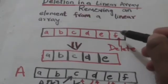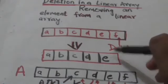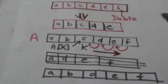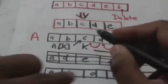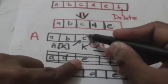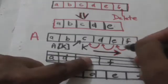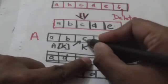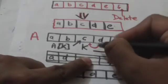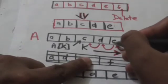If we have to delete the last element of the array then we can directly delete it. Now suppose this is the array A and we have to delete the element C from this array. Then element D will be shifted into the cell previously occupied by C, element E will be shifted into the next cell, and element F will be shifted into the following cell.